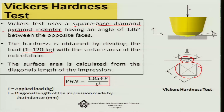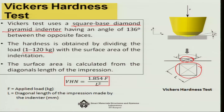The impression is a square-type indentation, unlike the circular indentation in the Brinell case. Once you know the indentation size and the applied force F in kg, you use the formula with factor 1.854 to obtain the Vickers hardness number. These three tests allow you to quantify hardness values.